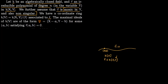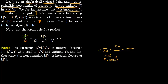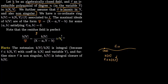We can find the residue field: take kV modulo the ideal (x−a, y−b), and this just becomes k, because this is an evaluation map. Any function g lying in the ring, evaluated at the point (a,b), gives a number in k. So kV/(x−a, y−b) ≅ k.